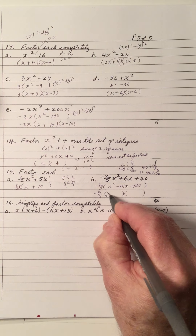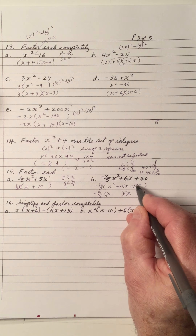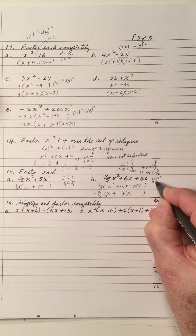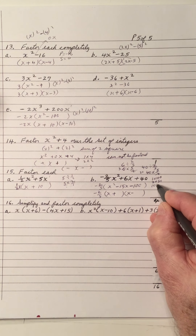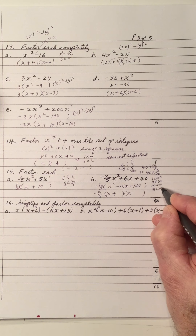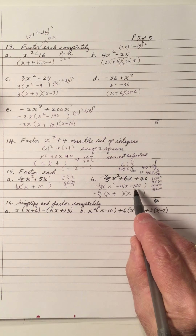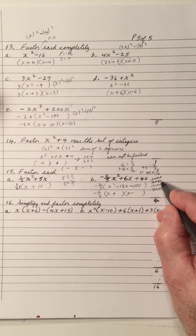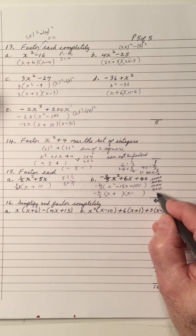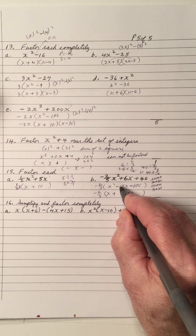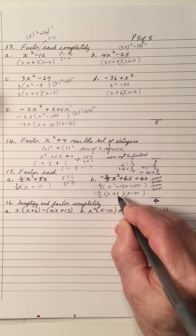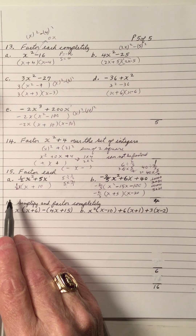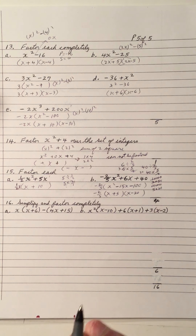The trinomial x squared minus 15x minus 100 — let's see if it factors. x and x, ends in minus so plus and minus. Product is negative 100, sum is negative 15. Factors of 100: 1×100, 2×50, 10×10, 5×20. Signs are different so factors differ by 15. 1 and 100 differ by 99; 2 and 50 differ by 48; 10 and 10 differ by 0; 5 and 20 differ by 15. So 5 and 20, with larger factor negative because sum is negative 15. Final factorization is negative two-fifths times (x + 5)(x − 20).